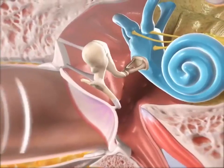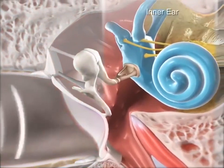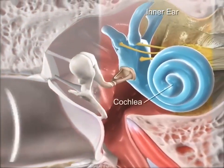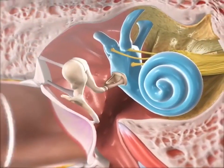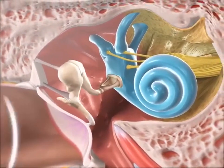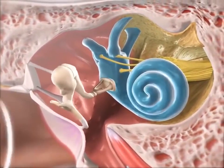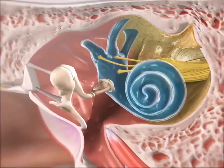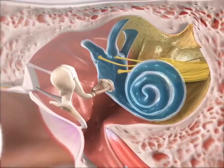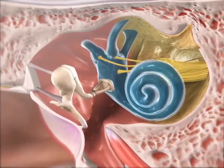The bones make contact with a fluid-filled structure in the inner ear called the cochlea. The mechanical movements of the auditory ossicles move fluid inside the cochlea, and fluid waves move hair cells that line the cochlea.